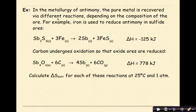Let's look at an example. In the metallurgy of antimony, the pure metal is recovered via different reactions depending on the composition of the ore. For example, iron is used to reduce antimony in sulfide ores. So we have our reaction right here, and our overall delta H is negative 125 kilojoules.